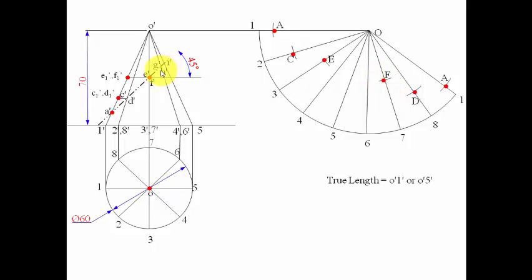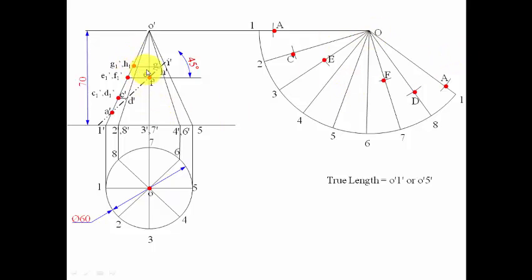Three more points remain: G-dash and H-dash on generators O4 and O6. Since they don't lie on the true length, we project them to get G1-dash and H1-dash. With O as center and that radius, we cut arcs at position 4 for point G and at position 6 for point H.